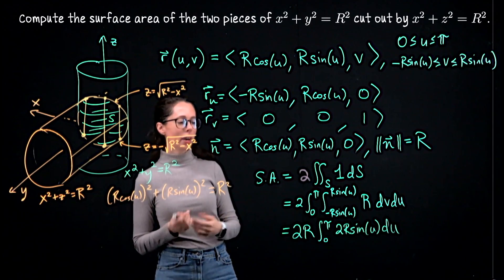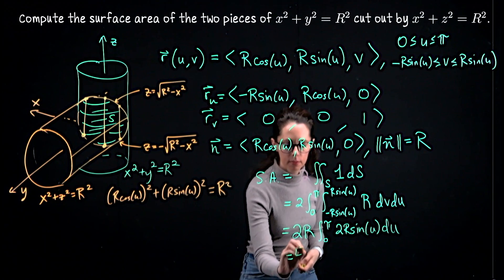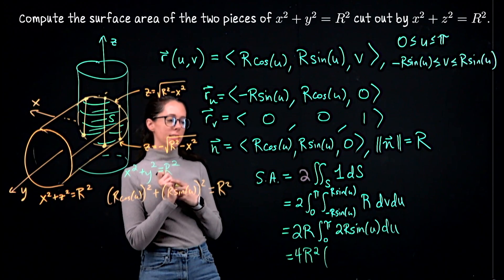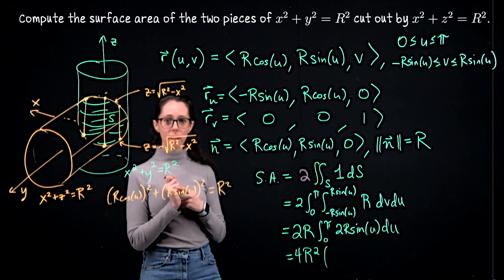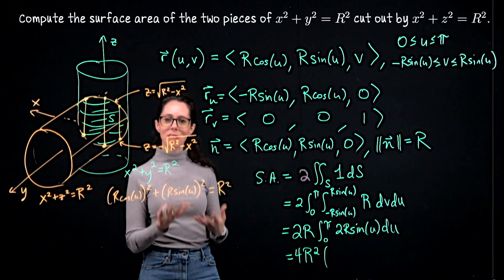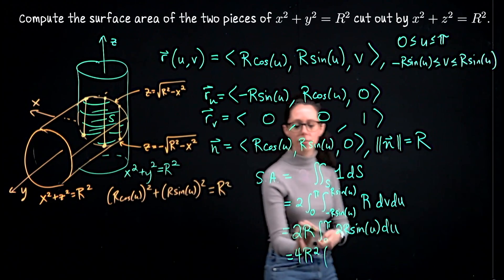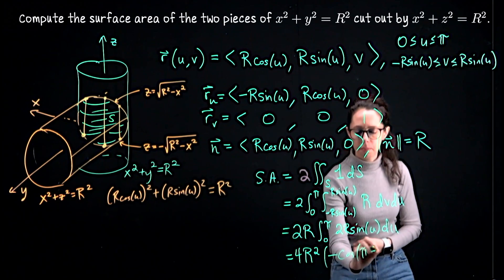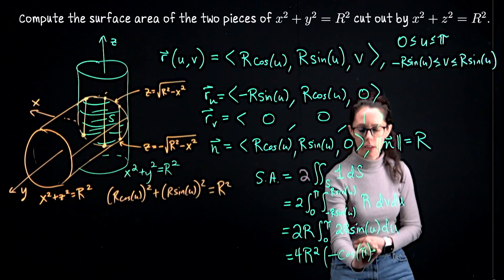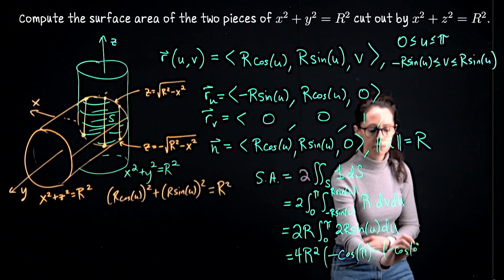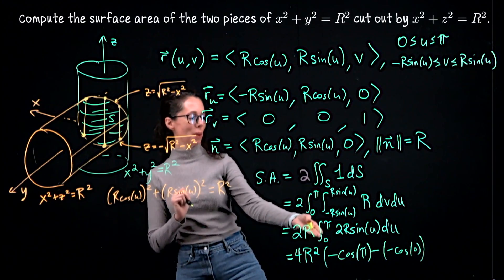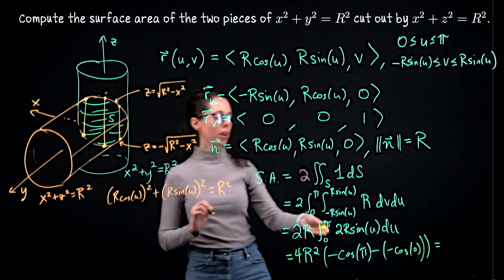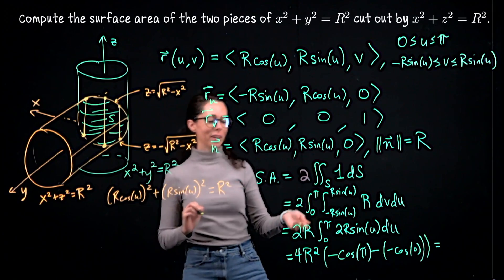This is also pretty nice. So I'll pull the two R in front, giving us four R squared. The anti-derivative of sine of u is negative cosine of u. Since that's not too bad, let me go ahead and plug in the top and bottom bound. So we'll have negative cosine of pi minus negative cosine of zero. So that's negative negative one is positive one plus one. So overall, this is two. Then we have eight R squared total.